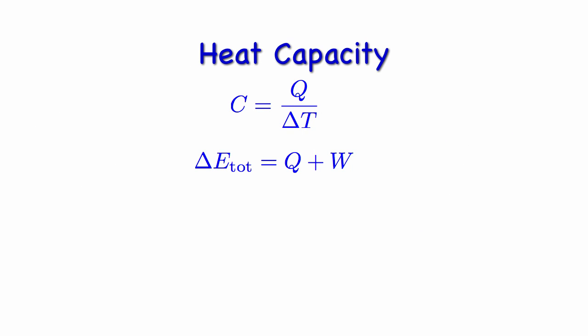Remember how we defined heat capacity. We said, I put in heat, I measure the amount of heat I put in, I divide by delta T. It tells you how much the temperature changed when you added heat to something.